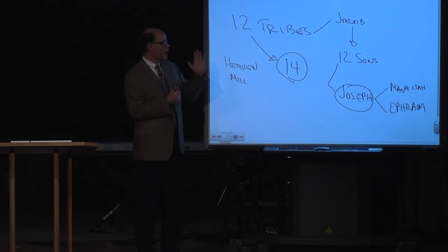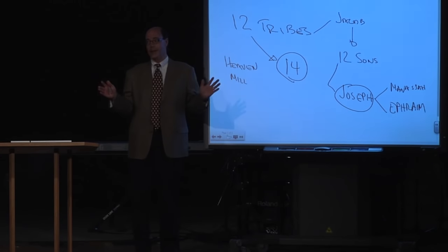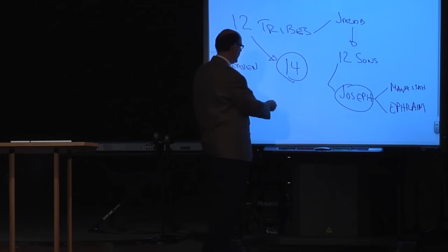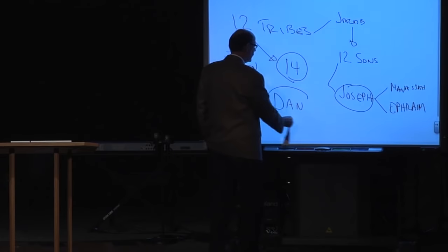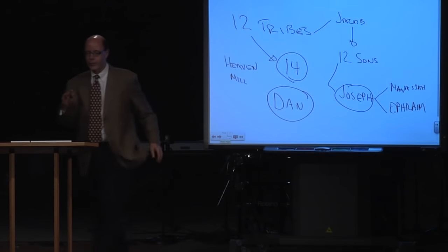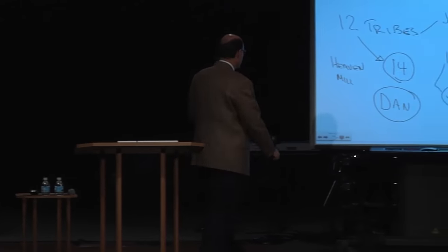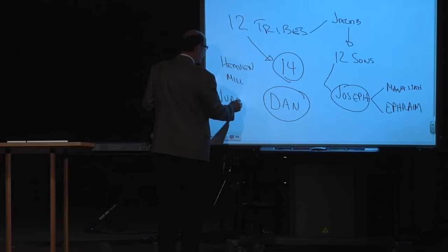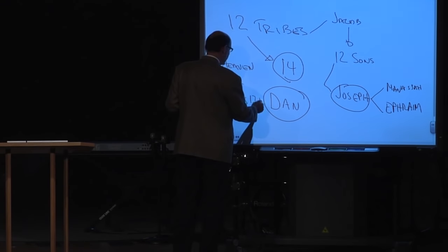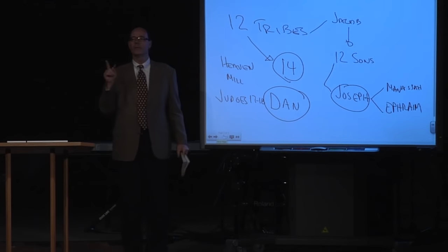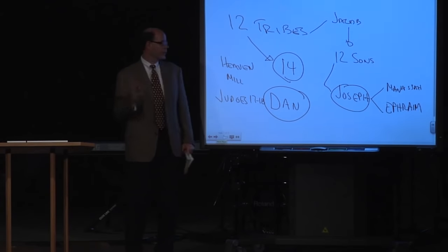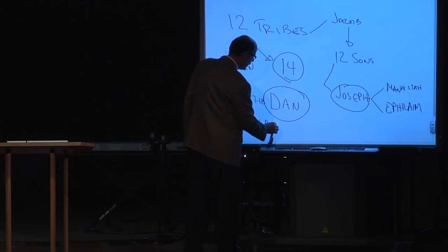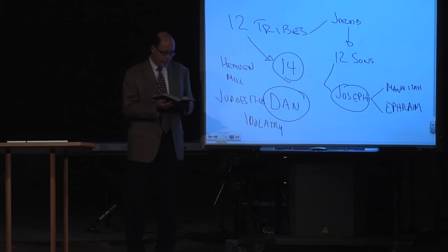Sometimes God uses the original 12 sons of Jacob — which would not include Manasseh and Ephraim. Other times God knocks out Dan, which was Scott's original question. One key reason can be found in Judges 17 and 18, where Dan becomes associated with idolatry earlier than almost any other tribe.